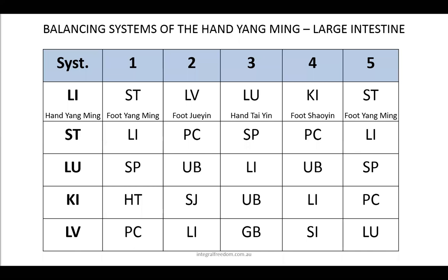In the case of the Han Yang Ming, the large intestine, being chosen as a meridian endpoint for treatment, we can consider these options. Using the six system matrix, we have the following connections: from Han Yang Ming to Fu Yang Ming in the stomach, from Han Yang Ming to Fu Jue Yin in the liver, to the Han Tai Yin in the lung, Fu Shao Yin in the kidney, and again Fu Yang Ming stomach.